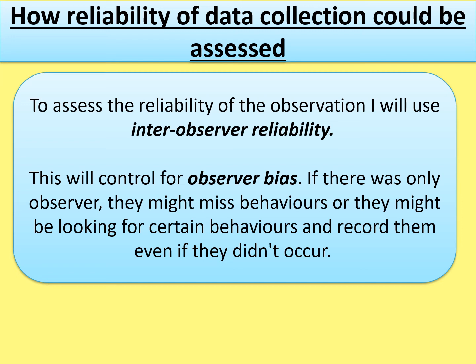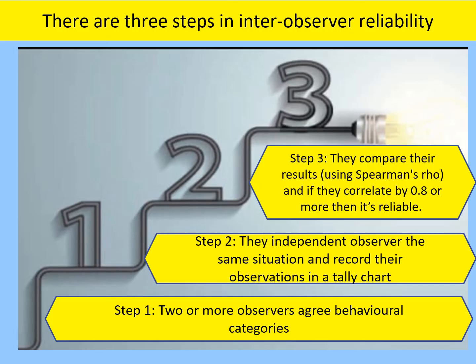The last bullet: how reliability of data collection could be assessed. Because this is an observation and there are only two types of reliability named on the spec — inter-observer and test-retest — we have to choose inter-observer reliability. Test-retest is used for questionnaires. You would write: 'To assess the reliability of the observation I will use inter-observer reliability' — this will control for observer bias, since a single observer might miss behaviours or record ones that didn't occur. There are three steps: step one, two or more observers agree the behavioural categories; step two, they independently observe the same situation and record their observations in a tally chart; step three, they compare their results using a Spearman's Rho test, and if they correlate at 0.8 or more, then it is reliable.